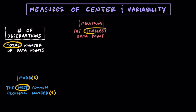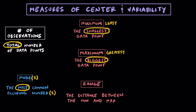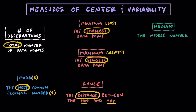While in some cases we'll just have one mode, in other cases we'll have multiple modes, or even sometimes no mode. Then we can identify what the minimum, or the smallest data point, is. This is going to be the least value. Following, we can identify the maximum, which is the biggest or greatest data point. Once we identify the minimum and maximum, we can then find the range — the distance between them. Now comes the median, which is the middle number of a data set.